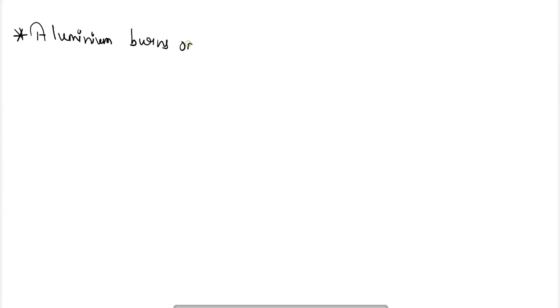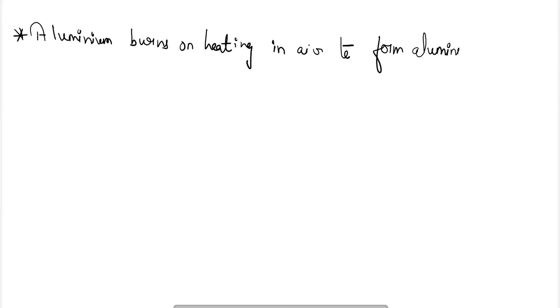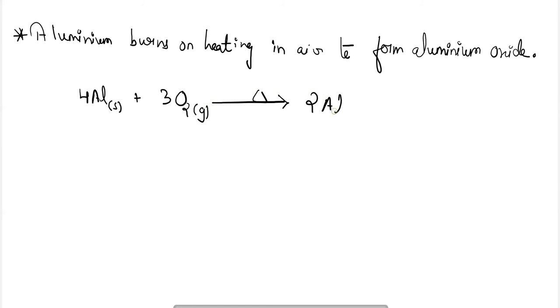For aluminium, it also burns on heating in air to form aluminium oxide (Al₂O₃). However, aluminium oxide has a unique nature — it is amphoteric, meaning it behaves both as an acid and as a base.